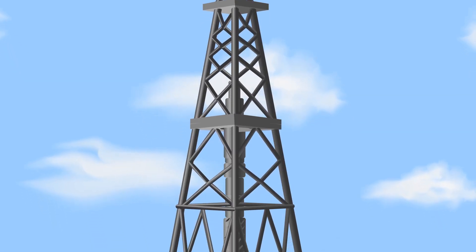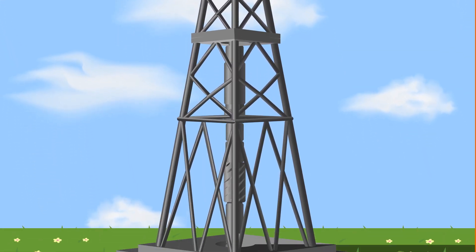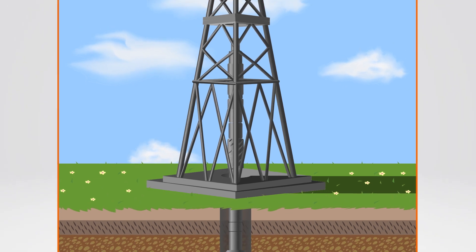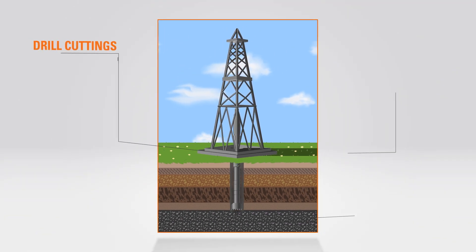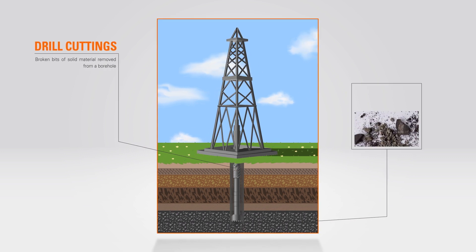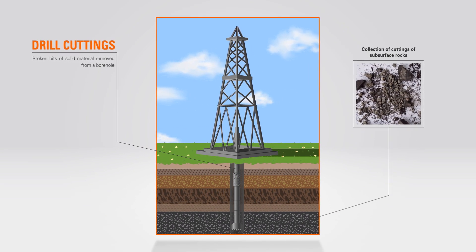Wells are drilled into the underground to access oil, gas, water, or geothermal energy. While the drill bit cuts into the formations, the crushed rock fragments, or cuttings, are flushed to the surface and collected by the geologist.